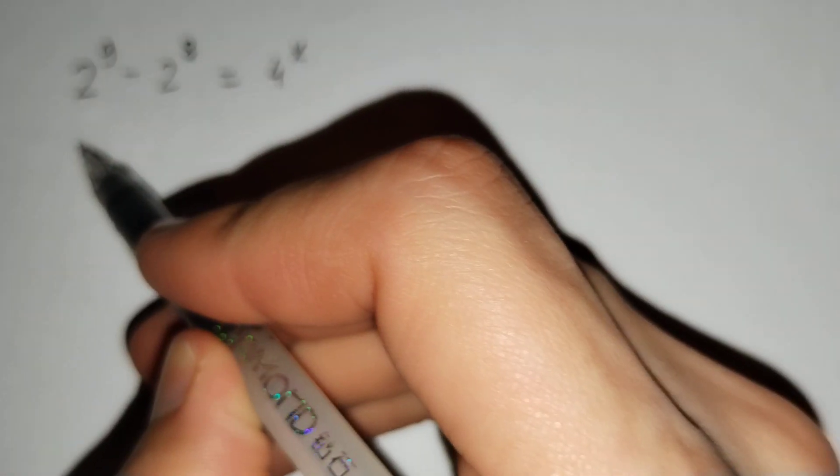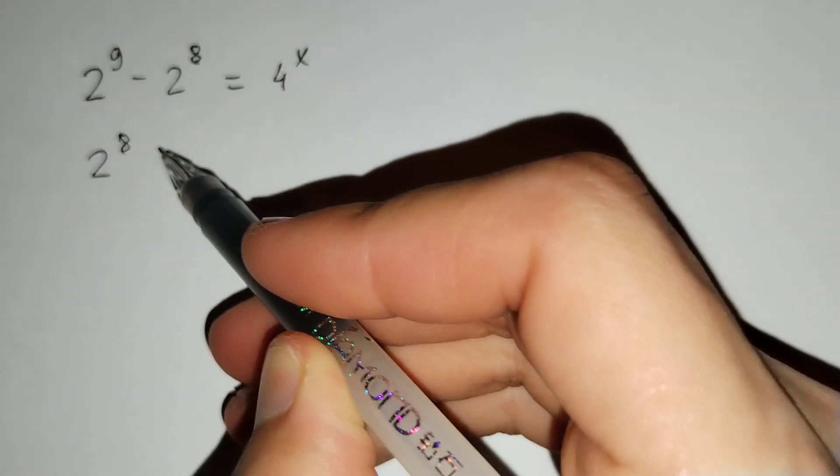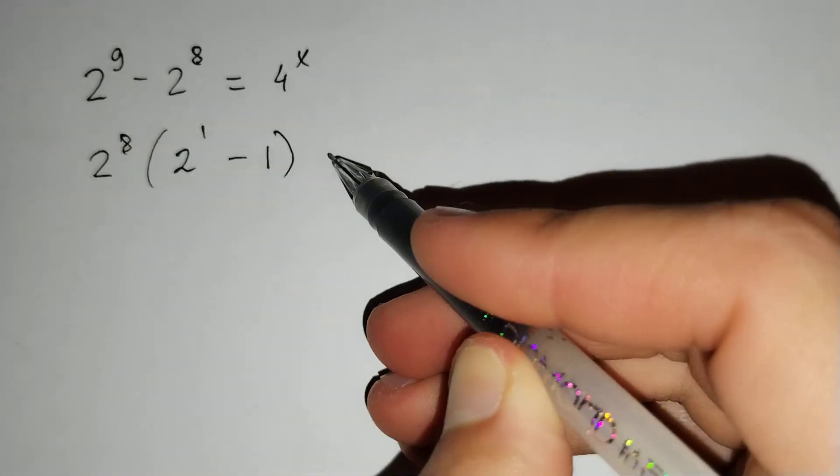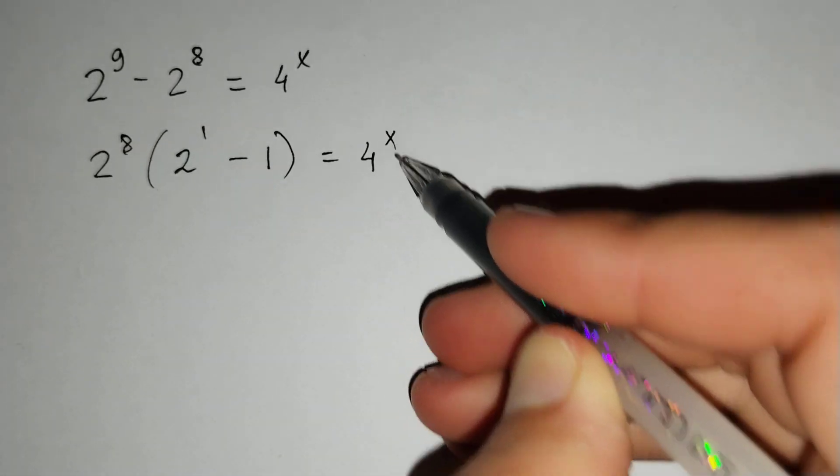If we take 2 power 8 out of the brackets, 2 power 1 remains here, minus 1 remains here, equals 4 power x.